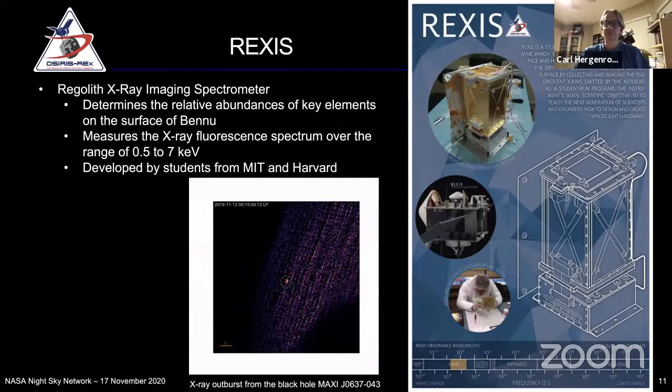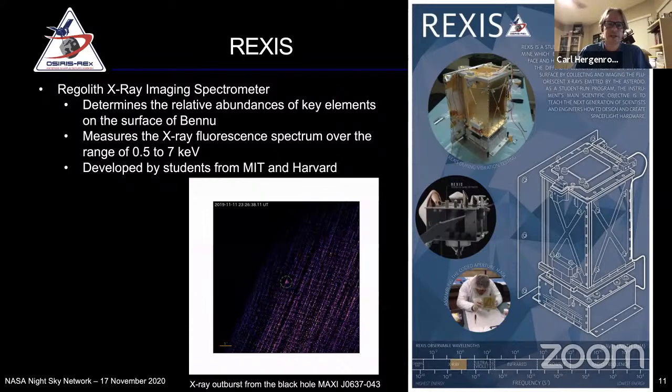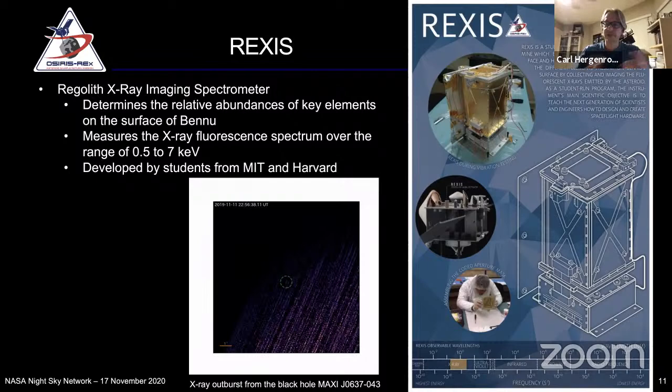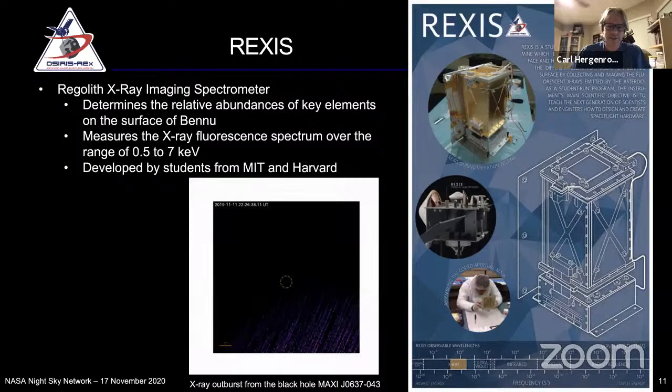The last instrument is REXIS, a student-built instrument selected through a competition among universities. It's an X-ray imaging spectrometer - the asteroid itself doesn't emit X-rays, but during a solar flare you get fluorescence of surface material that the instrument can detect. During the mission, they actually detected an X-ray outburst from a black hole, which was pretty cool.